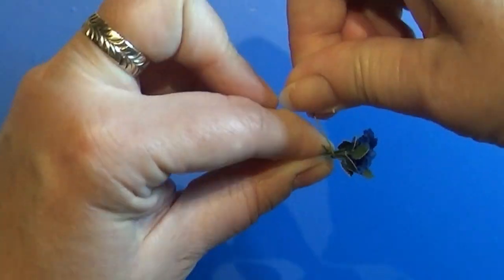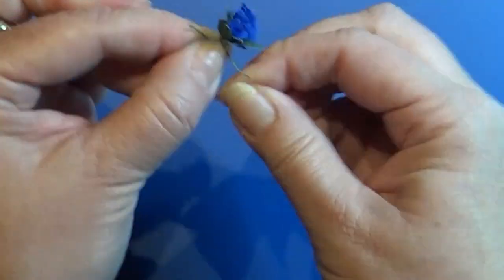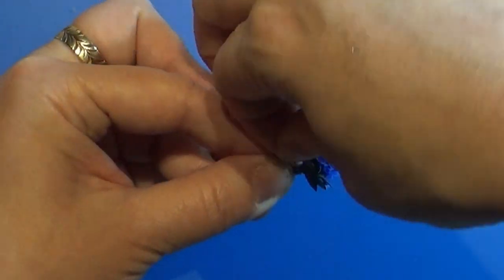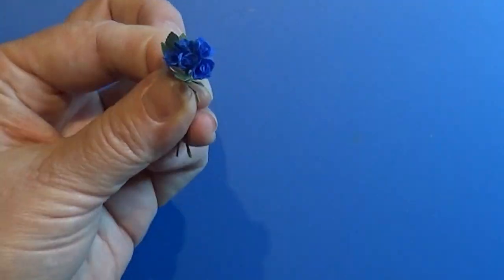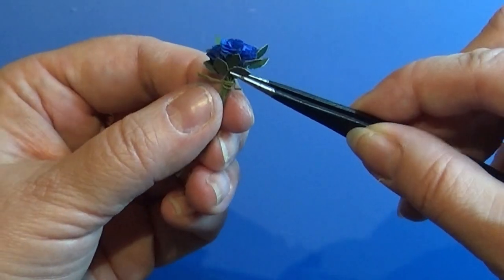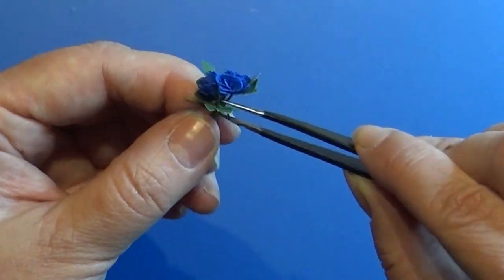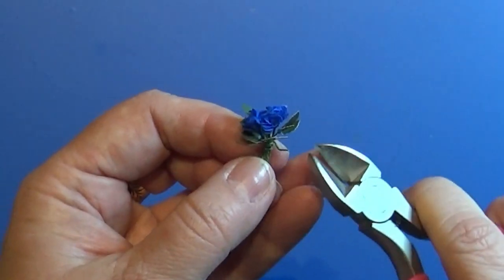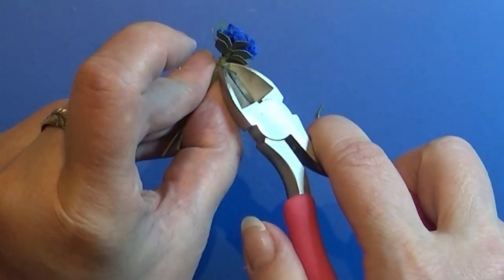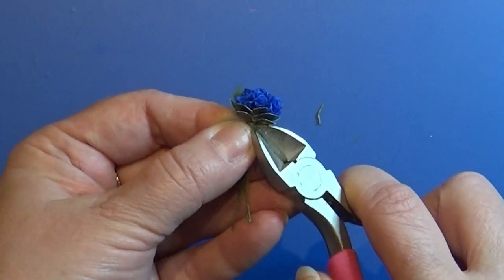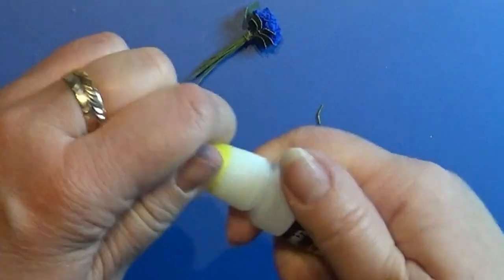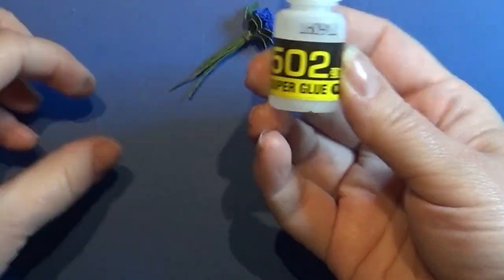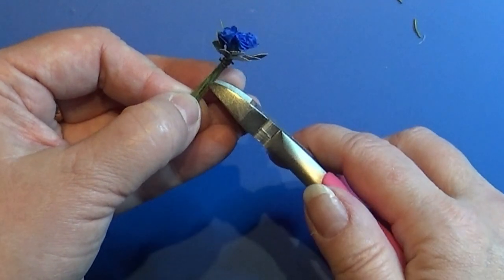When I'm happy with my bouquet I take a tiny piece of the green flower wire and I wrap it around the bouquet. Then I cut the excess wire and I take a tiny bit of super glue and I glue this wire in place so it won't come apart again.